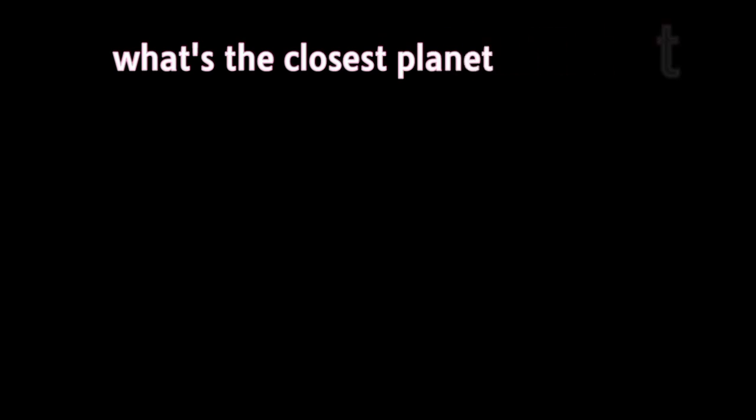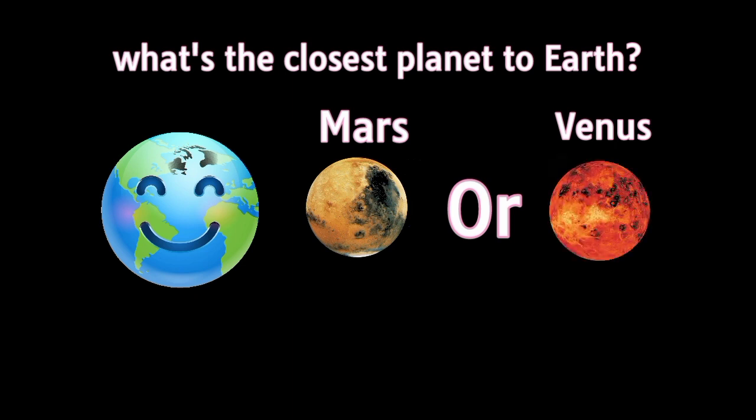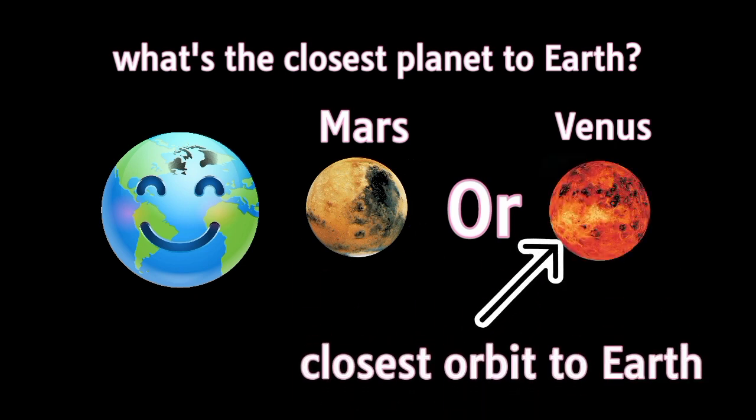What's the closest planet to Earth? Common sense would say the answer is either Mars or Venus, our next-door neighbors. Of the two, Venus comes closer to the Earth than any other planet and its orbit is closest to ours.